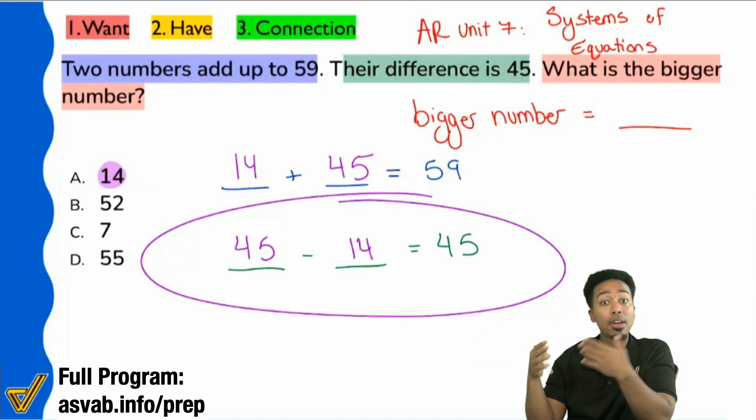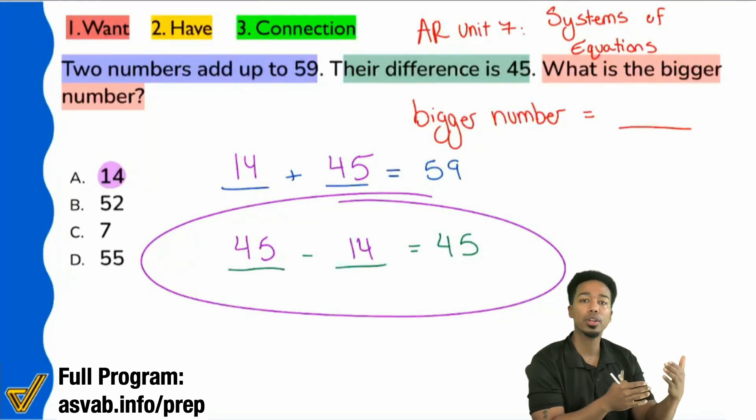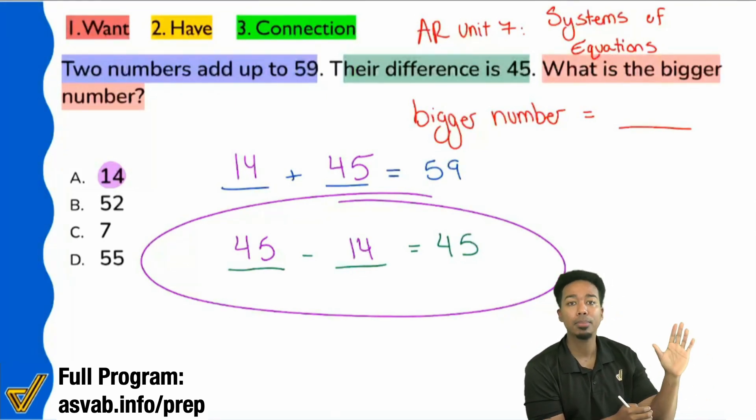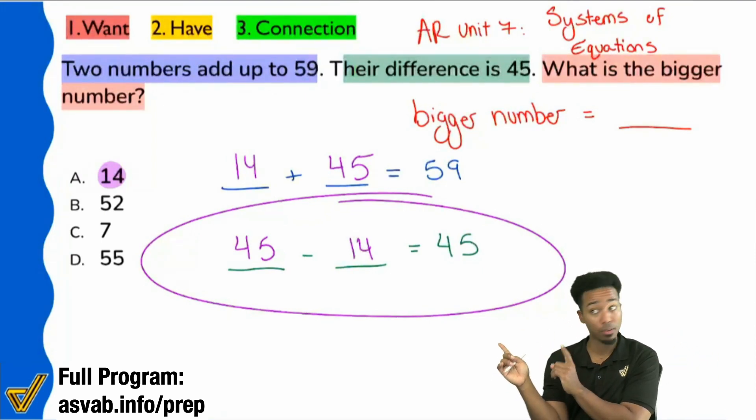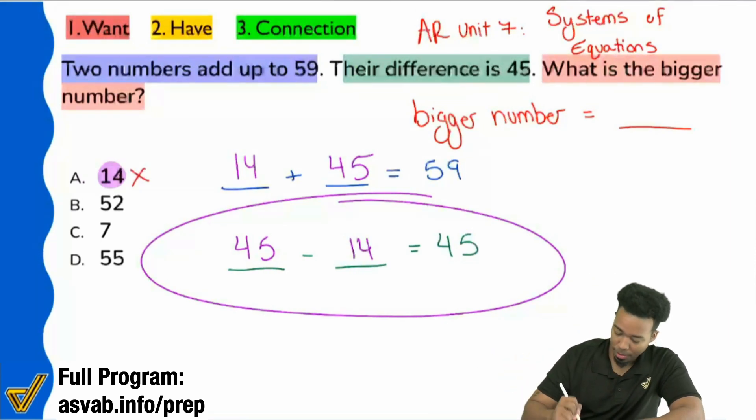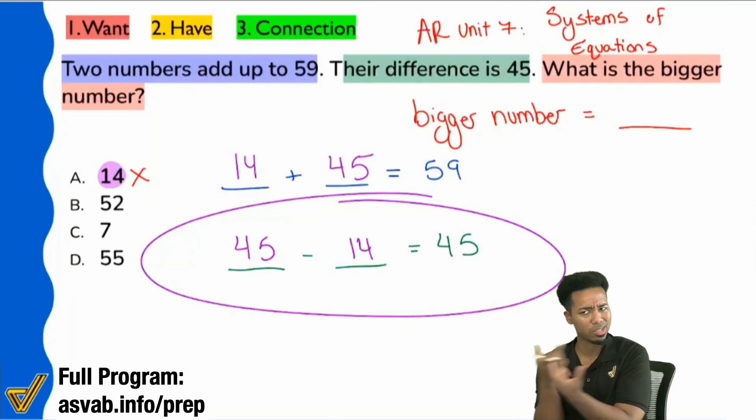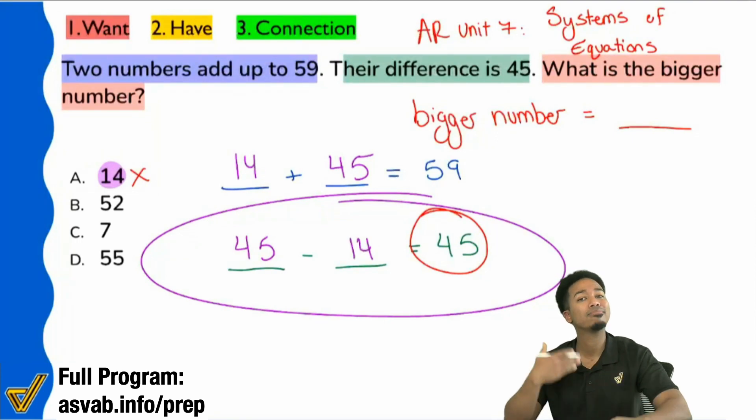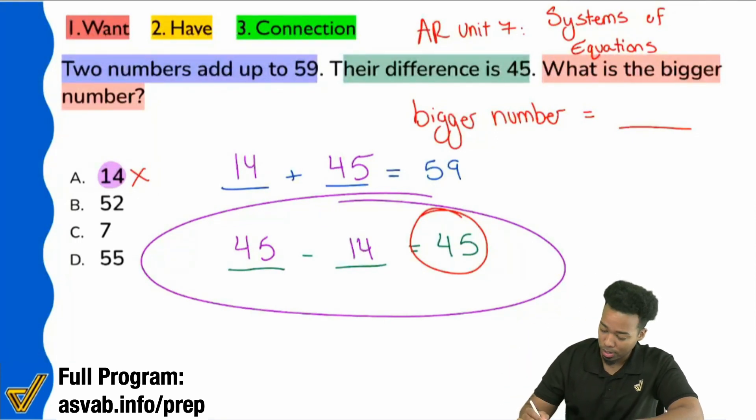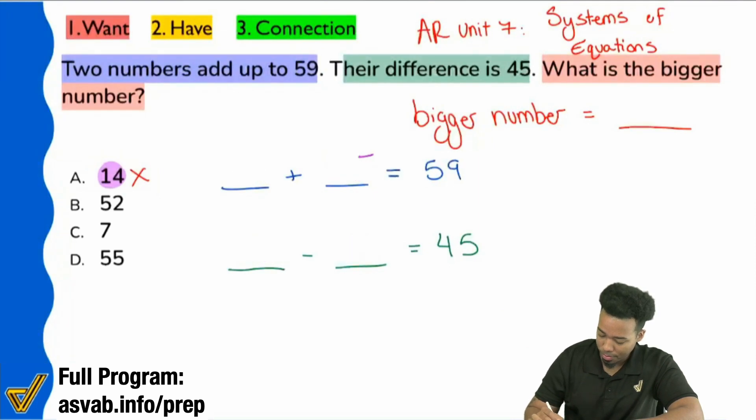And again, I'm showing you the strategy for using the answer choices. I'm going to show you all four choices and find out which one actually fits. But then I'm going to turn around and I'm going to show you how to do it the straightforward way. Because in many situations, the straightforward way is the faster way. Notice how this will get us the answer eventually, but it might take some time. So this will not work. Because again, 14, the other number would have to be 45 to add up to 59.